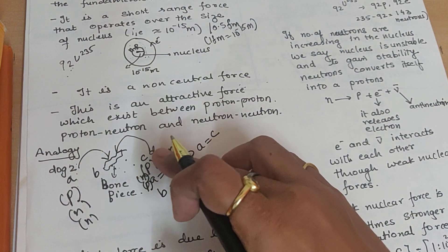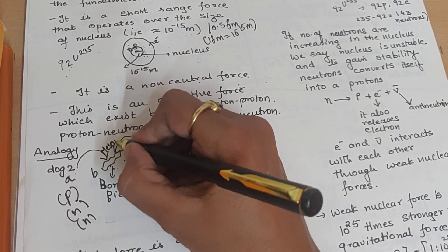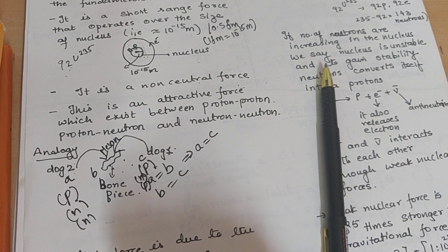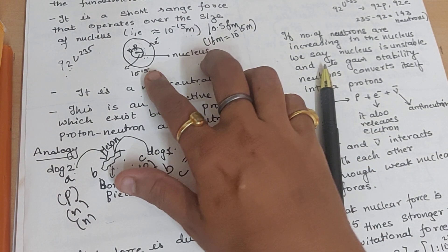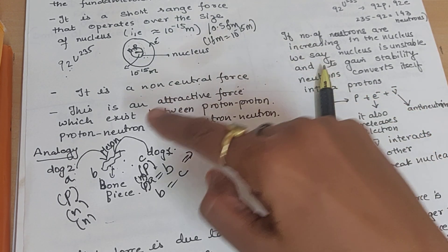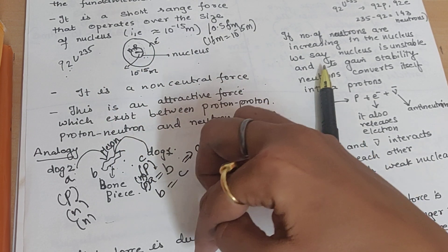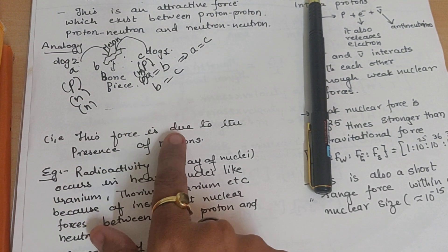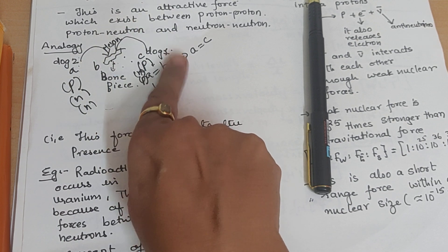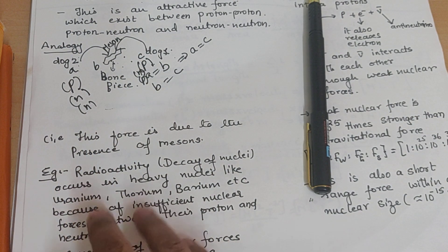So these protons and neutrons are like dog one and dog two. What is the bone piece? The bone piece is nothing but a meson. The meson is a particle that acts as the binding agent between them. Actually, this is studied at higher standards, but you should know that protons and neutrons stay bound inside the small massive nucleus because there is an exchange of — or the presence of — mesons, generally pi-mesons. So this force is due to the presence of mesons, which are the glue that keeps proton-proton, proton-neutron, or neutron-neutron bound.